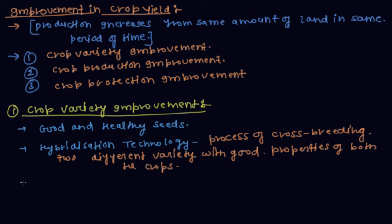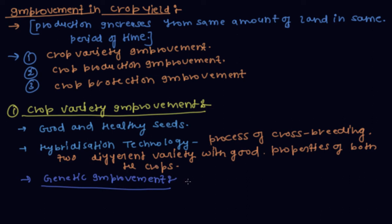The third approach to variety improvement is genetic improvement. In genetic improvement, the genes of the crop are modified so that desired properties are retained and undesired properties are suppressed.